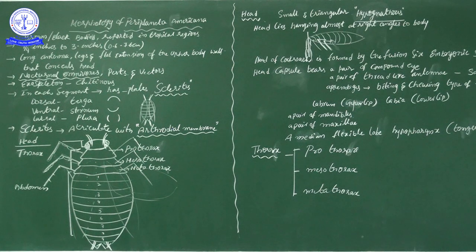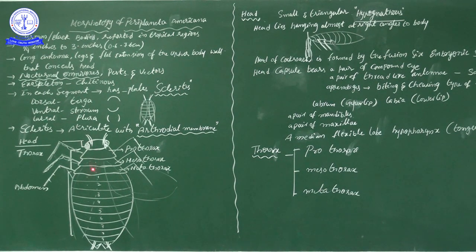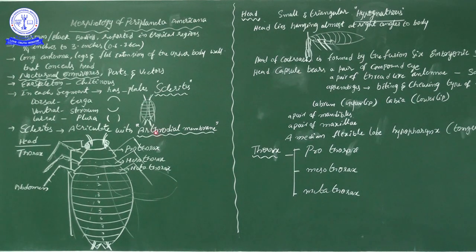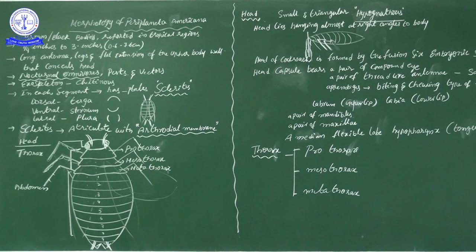Body segmentation was seen in the general characteristics of classification. Here, the body is segmented into head, thorax, and abdomen. Each segment has plates called sclerites. The sclerite on the dorsal side is called terga. The sclerite on the ventral side is called sternum. The sclerite on the lateral sides is called pleura.